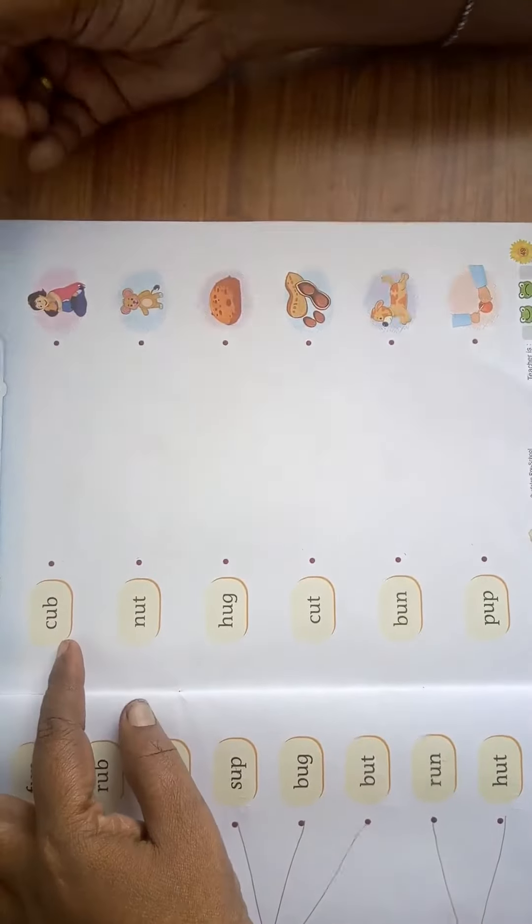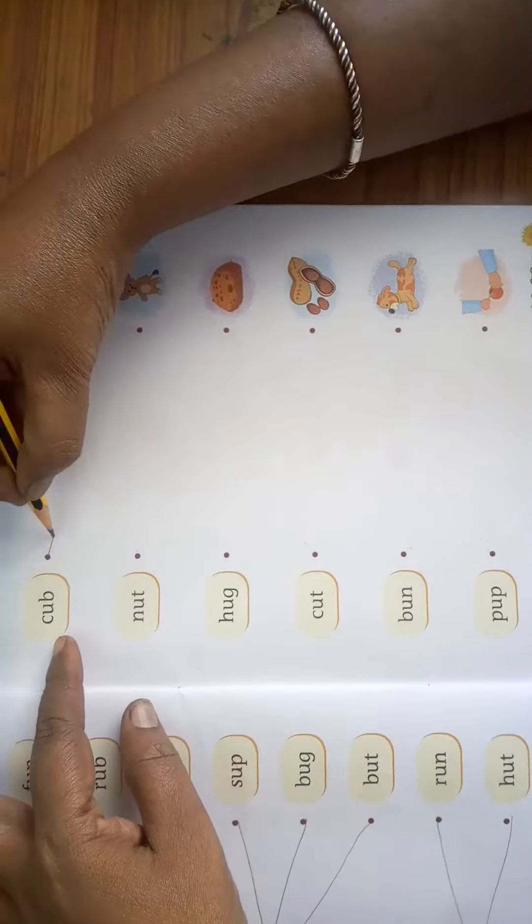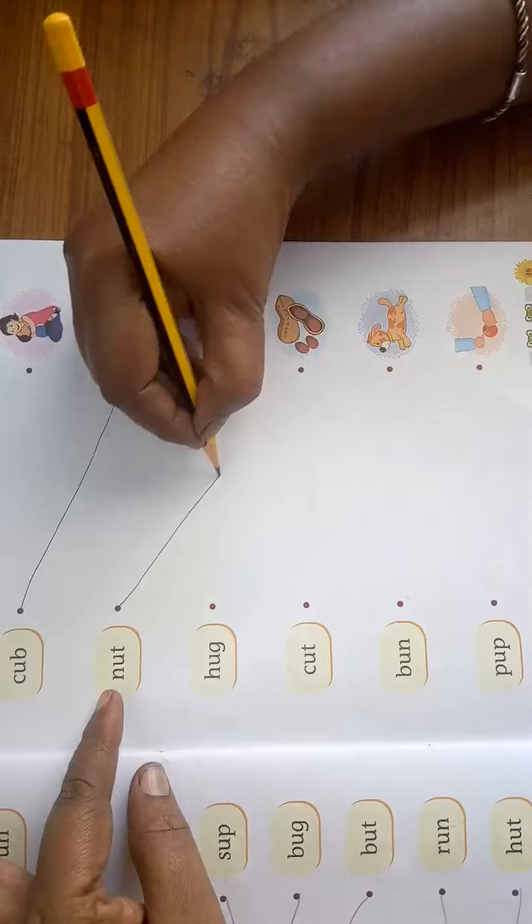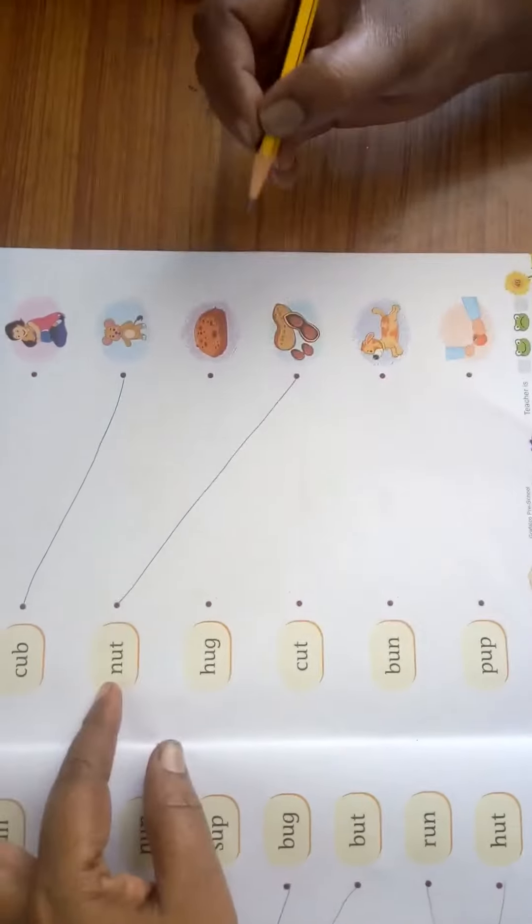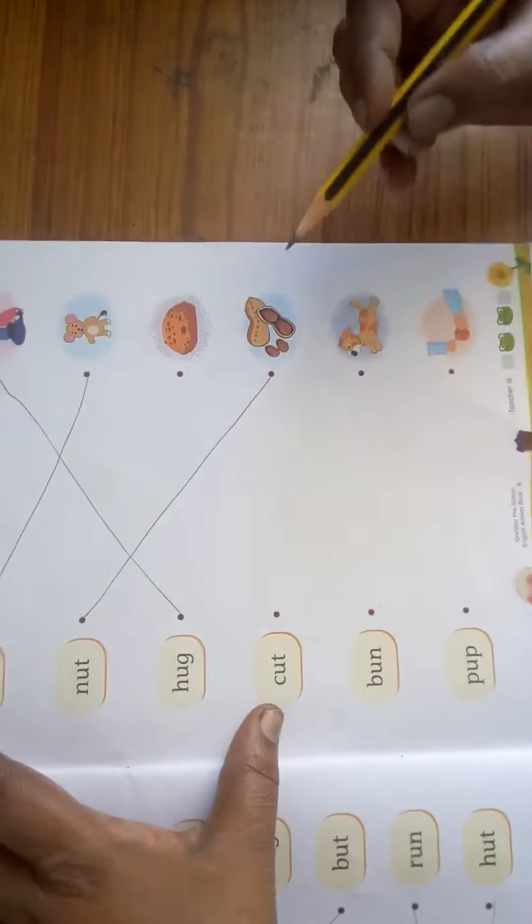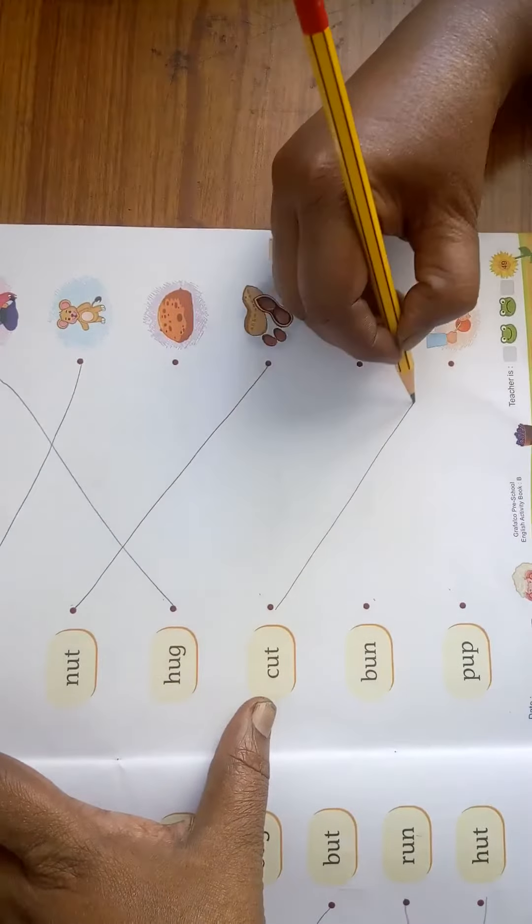Where is the cub? See one small teddy cub is here. Dot to dot. Nut. Where is the nut? Here is the nut. N-U-T, nut. Hug. H-U-G, hug. Cut. C-U-T, cut.